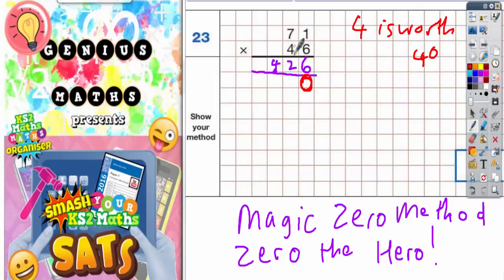So because the zero has gone in, all we need to do now is times 4 by 1 and 4 by 7 in that order. So 4 times 1 is 4 and 4 times 7 is 28. Put the 8 in.